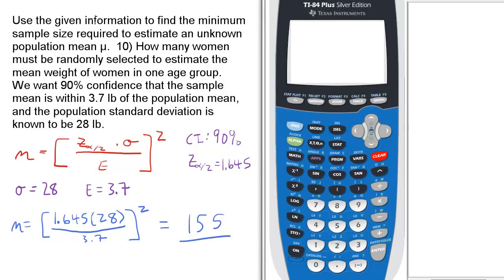We use the given information to find the minimum sample size required to estimate an unknown population mean mu. We want 90% confidence the sample mean is within 3.7 pounds of the population mean, and the population standard deviation is known to be 28 pounds.